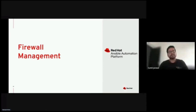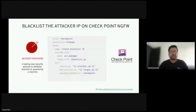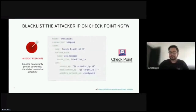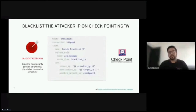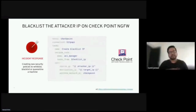First we'll discuss firewall management. Here we look at an incident response scenario where we have identified an attack and need to block access to a specific machine that is the target of the attack. Using content from the ACL manager security automation roles, we are able to block access via a playbook. Because we are using variables as input, these variables can be passed dynamically, and alternatively this information can be supplied to an Ansible Tower job via an input template or through the Tower API call for further integration.